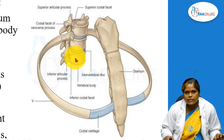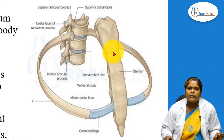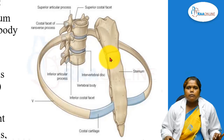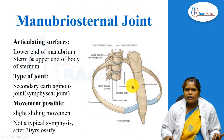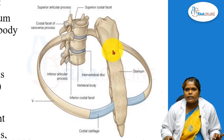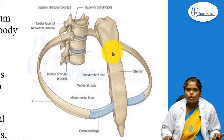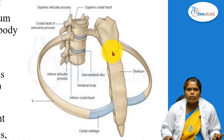Other examples of symphysial joints include the intervertebral joints. Remember that the secondary cartilaginous joint or symphysial joint is usually present along the midline of the body. Although this is a secondary cartilaginous joint, it is not a typical joint because after 30 years the symphysial joint becomes ossified — so it is not a typical symphysial joint. The movement occurring here is a slight sliding movement which is necessary for respiration.